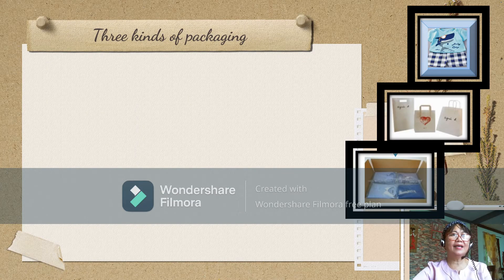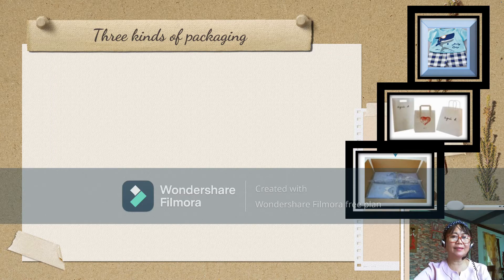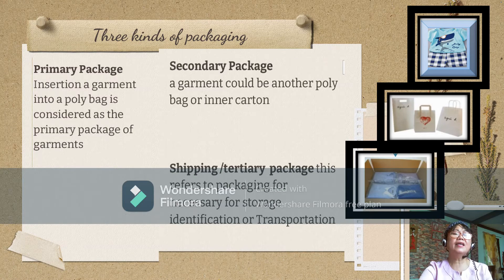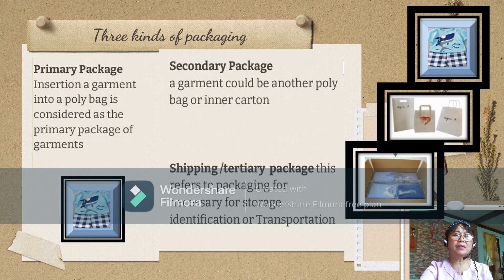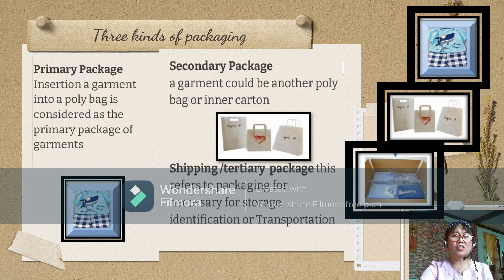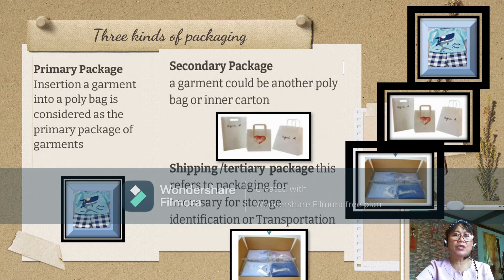Basically, the clothing manufacturer uses three kinds of packaging. What are the three kinds of packaging? Identify these three pictures. We have primary, secondary, and shipping or tertiary package. Primary package: insertion of a garment into a poly bag is considered as the primary package of the garment. Secondary package: a garment could be placed in another poly bag or inner carton. While the shipping or tertiary package refers to packaging necessary for storage, identification, or transportation of the products.